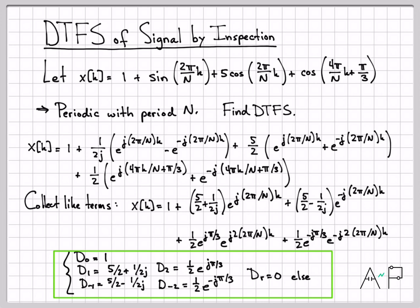That's it for this example — we found the DTFS coefficients using the inspection method. In the next example, we'll go back to using the definition and find the DTFS representation of a periodic square wave. Stay tuned for that next example. Thanks for watching.